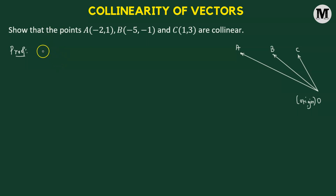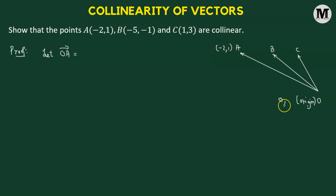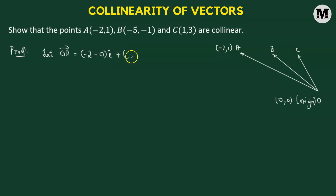We'll define the position vector of point A, which is given by the OA vector. We take the endpoint of the vector, which is A, having the coordinates negative two, one, and subtract the coordinates of the origin, which is 0, 0. We take the difference of the X coordinates: negative two minus zero, multiplied by i-cap, indicating the component along the X direction. Added to the difference of the Y coordinates: one minus zero, multiplied by j-cap, indicating the Y direction. So OA vector comes out to be negative two i-cap plus j-cap.